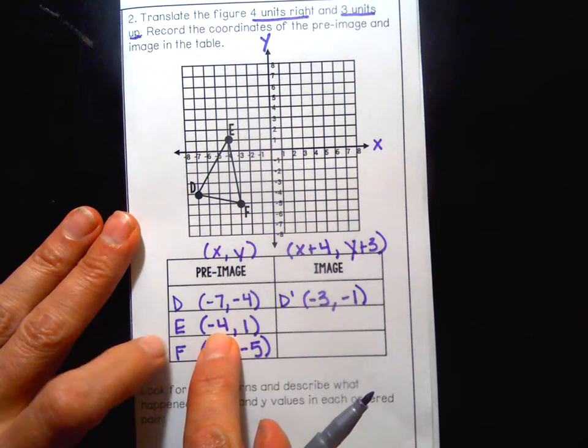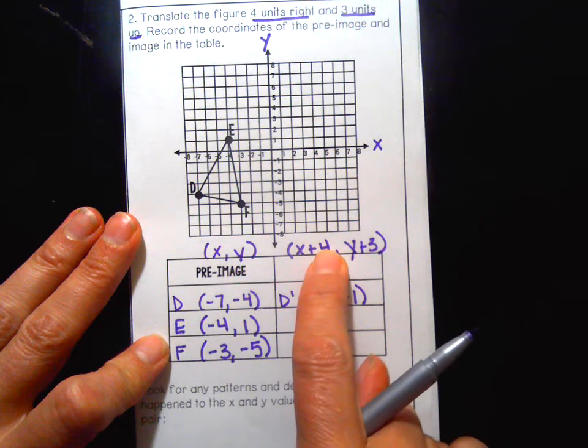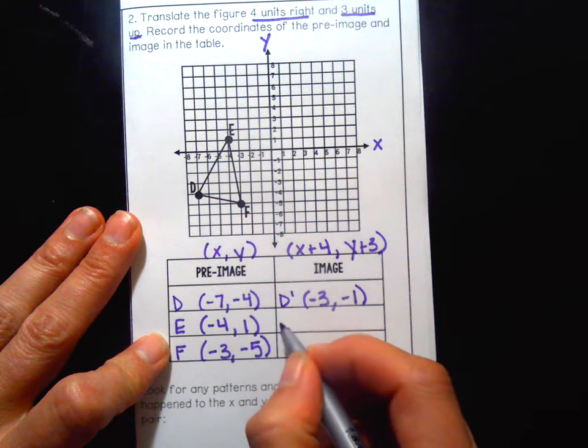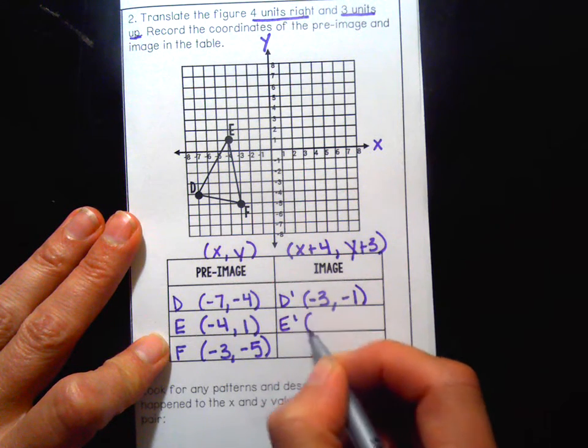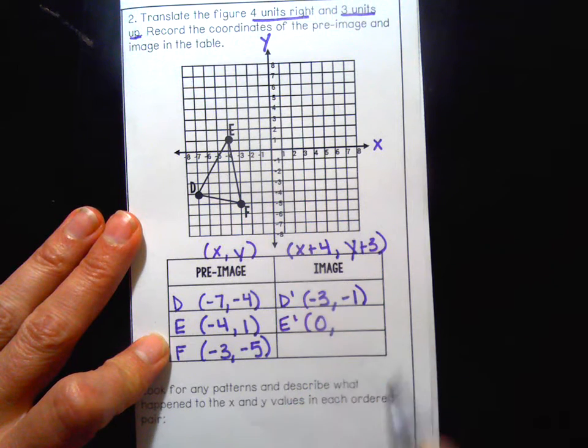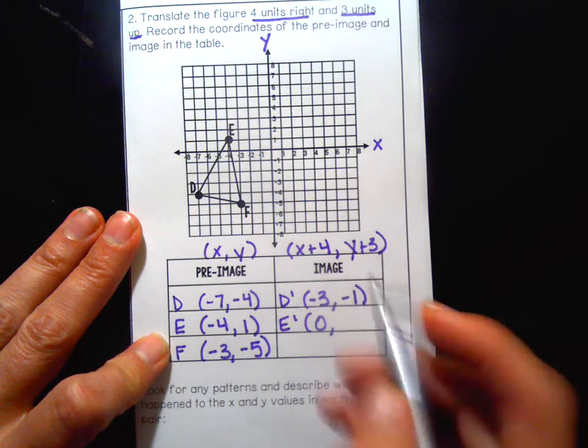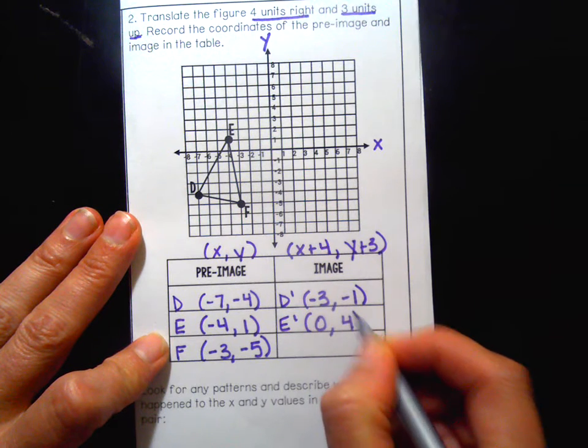For E, negative four plus four, oh those are opposites, they cancel out and make zero. So E prime zero. One plus three, easy peasy, that's four.